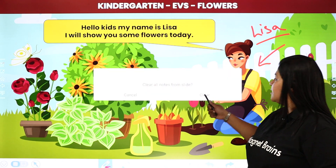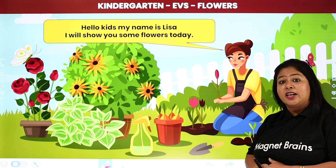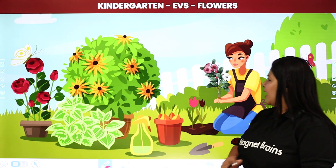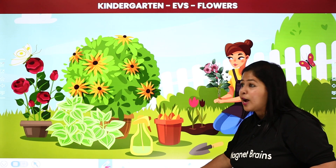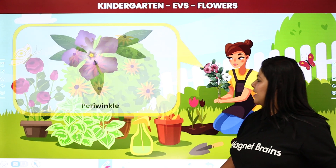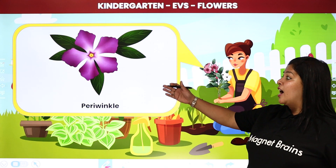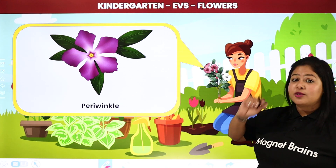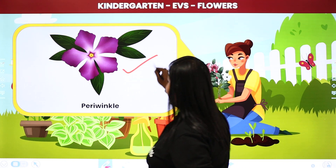So student, we'll go with Lisa. Aur Lisa ke saath hum chalke dekhte hain. Lisa hamein kahan leke ja rahi hai? Apne garden mein — beautiful garden. So student, this is the first flower Lisa has in her garden. Lisa ke garden mein jo sabse pehla flower hai — this flower.